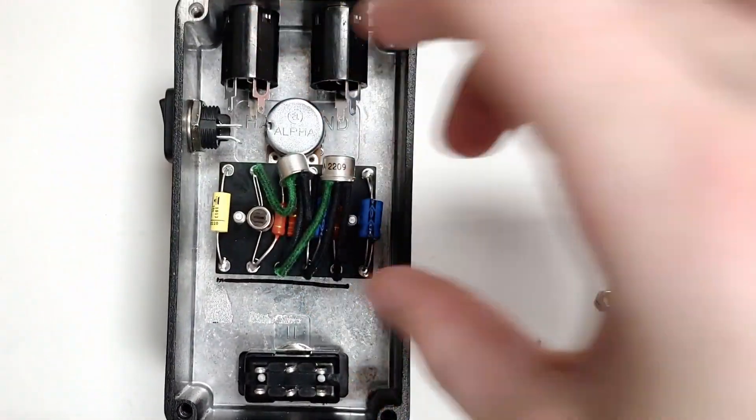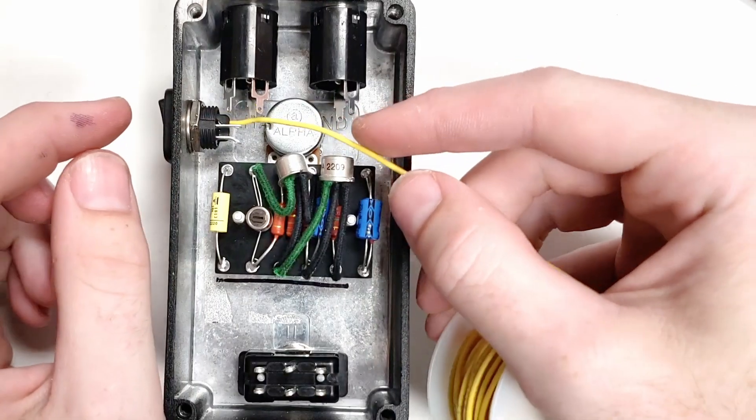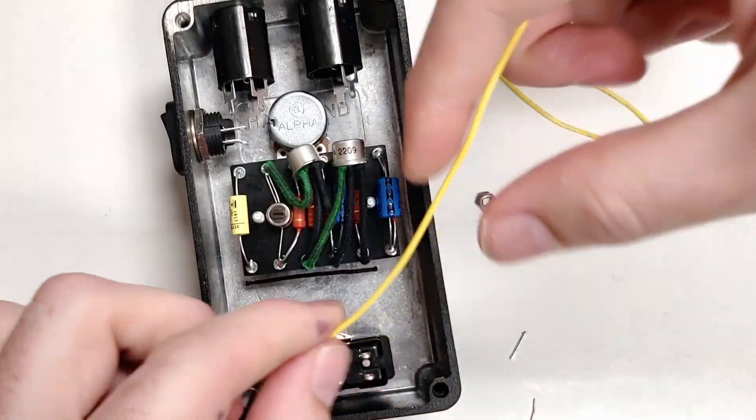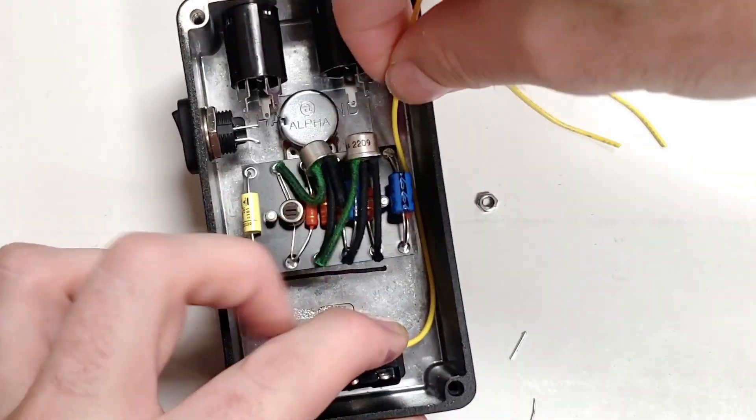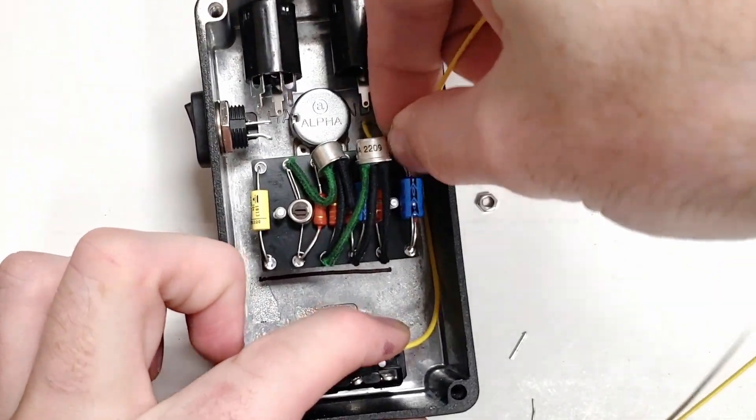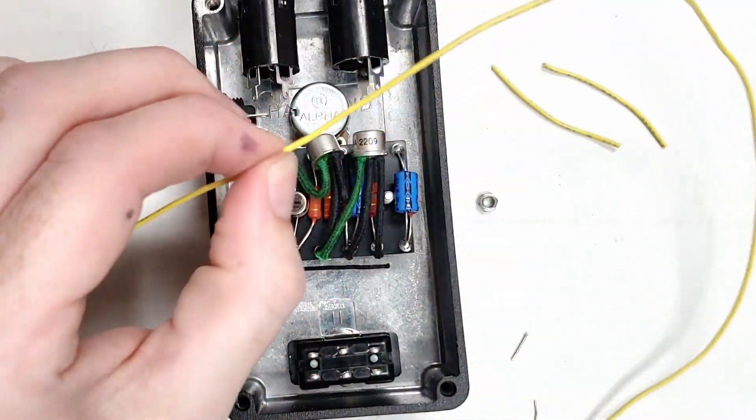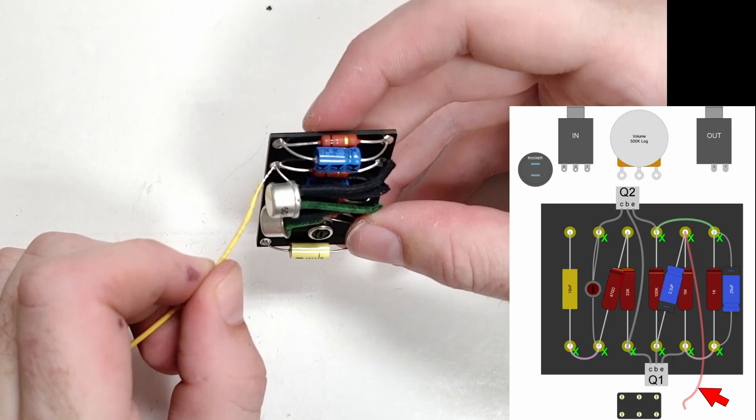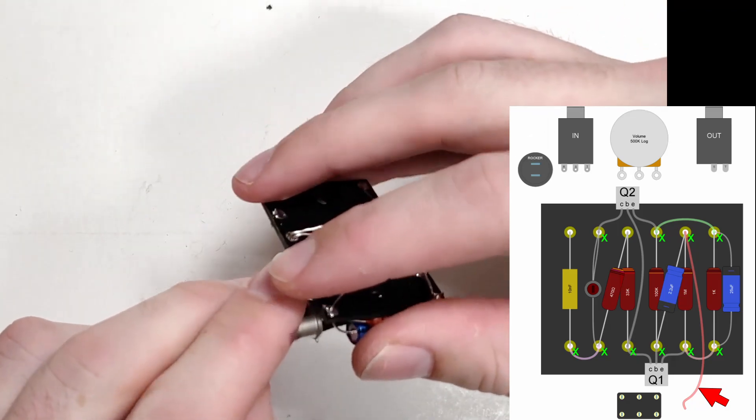With the board in its final location, we cut wire to the length of the offboard connections by eyeballing the required length. With the wire cut to the right lengths, it can be installed in the target eyelets.